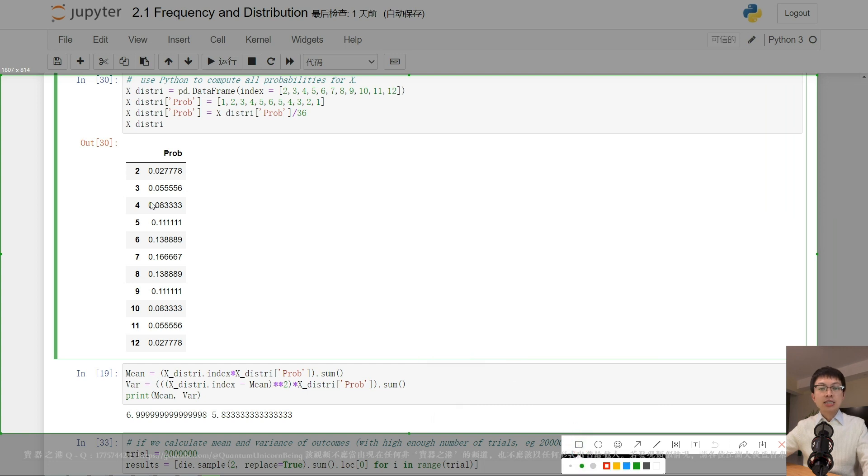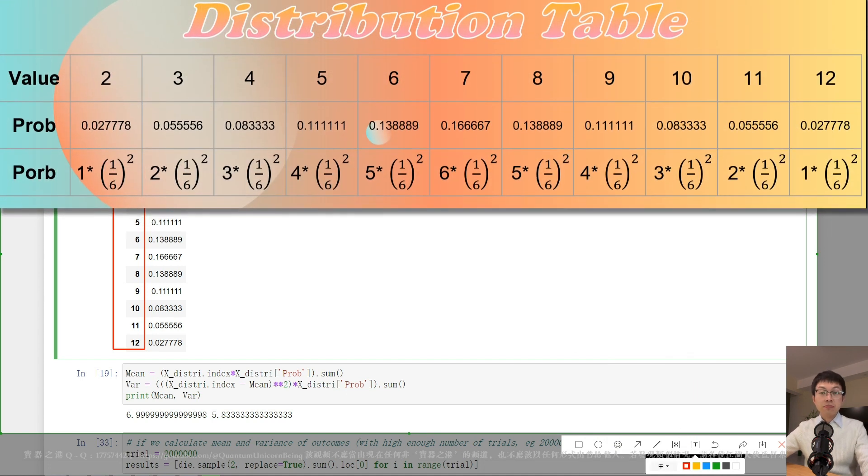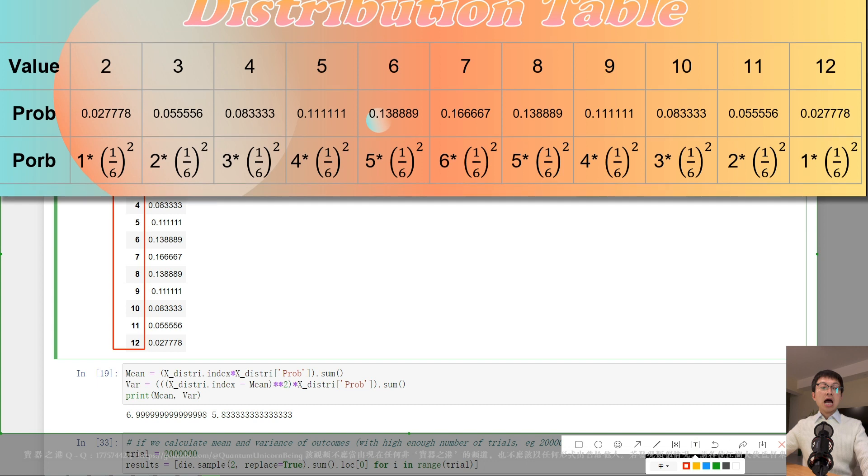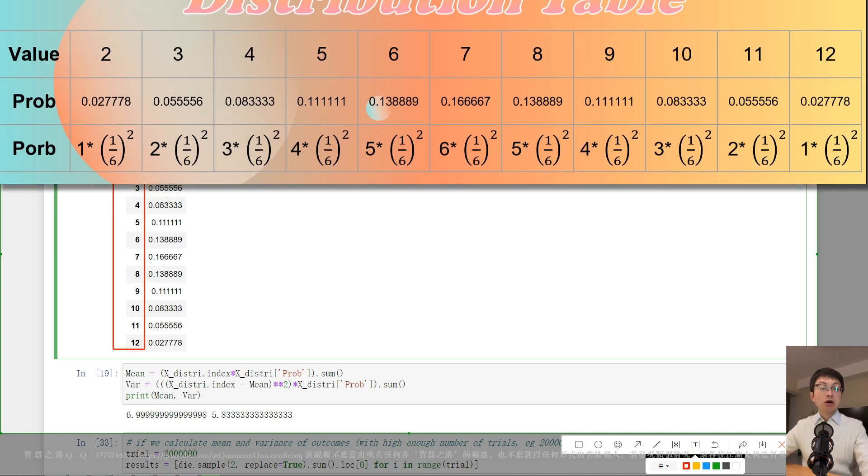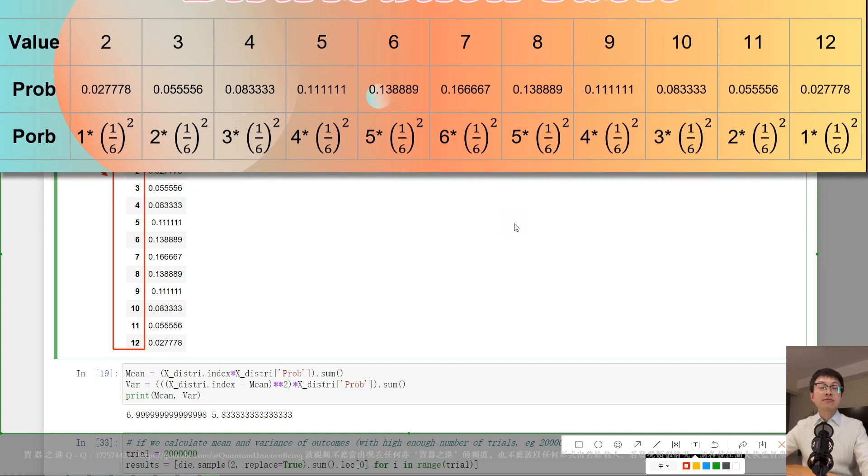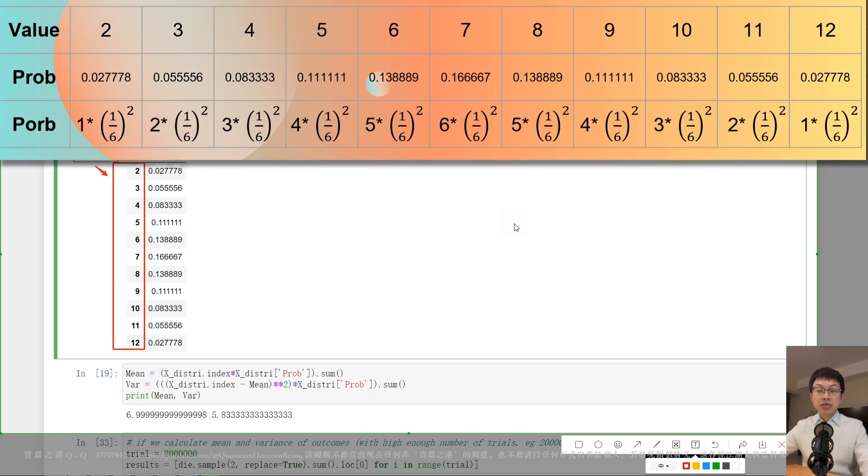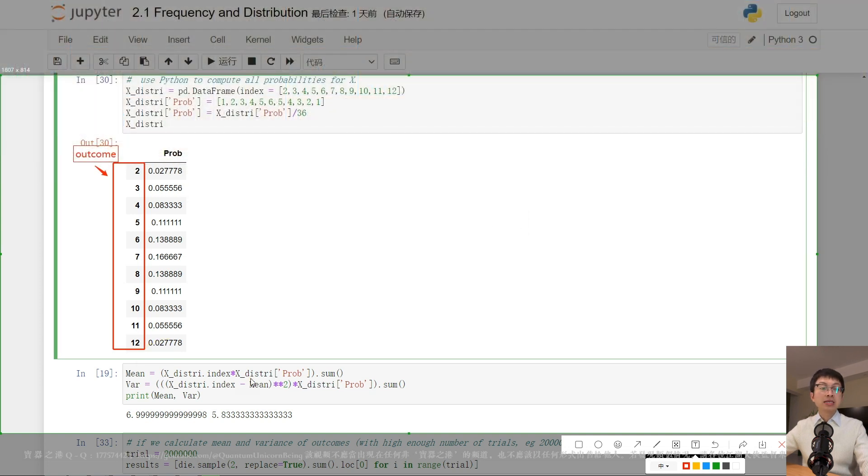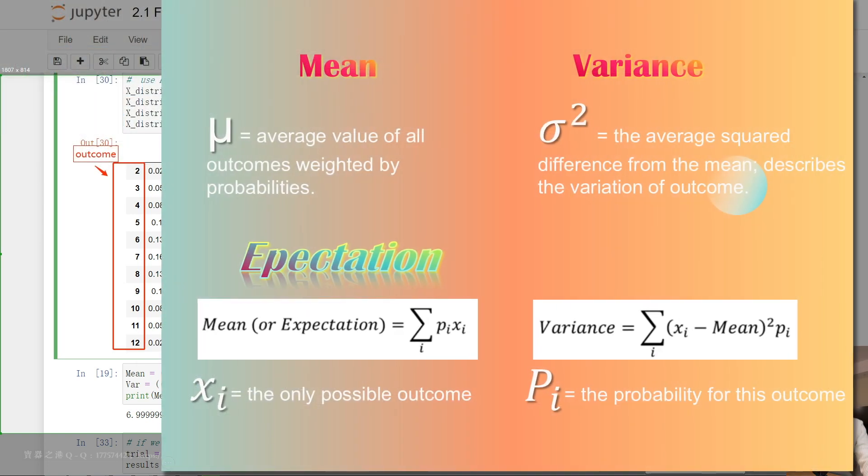However, this distribution table does not immediately reveal the shape of the outcome. Typically, the mean and variance are two characteristics of the distribution of random variables. The mean of a random variable is also known as the expectation.